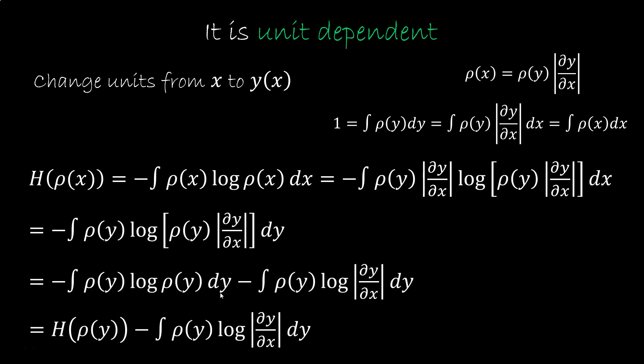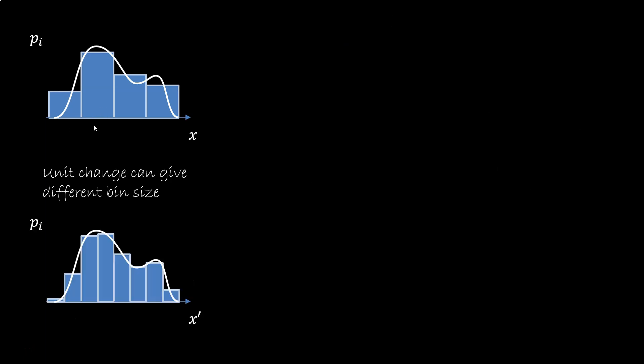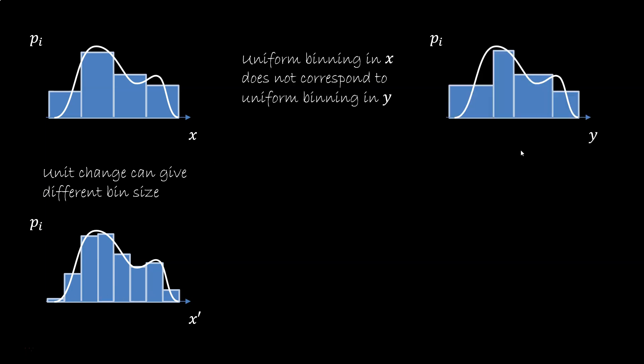So the entropy in the old unit is the entropy in the new unit minus the average of the log of the Jacobian. Note that this number will be different for each distribution, so it's kind of a mess. What does this mean physically? A unit change will change the bin size, so it changes the unit distribution we use for comparison. Also, a uniform binning in x does not correspond to a uniform binning in y, which makes things very complicated. What we can do is change the definition that we had before.